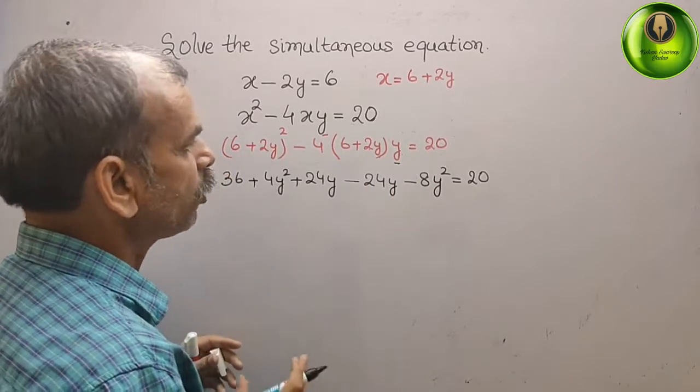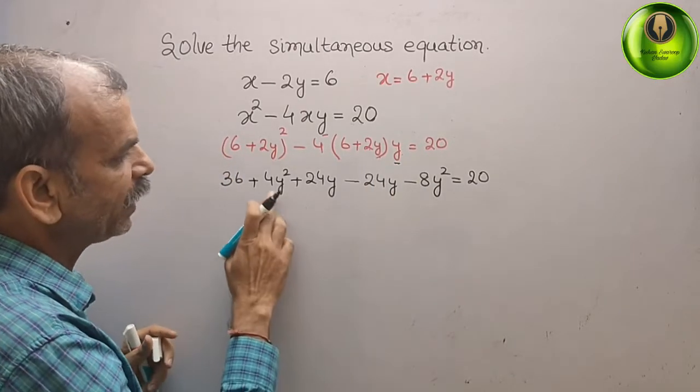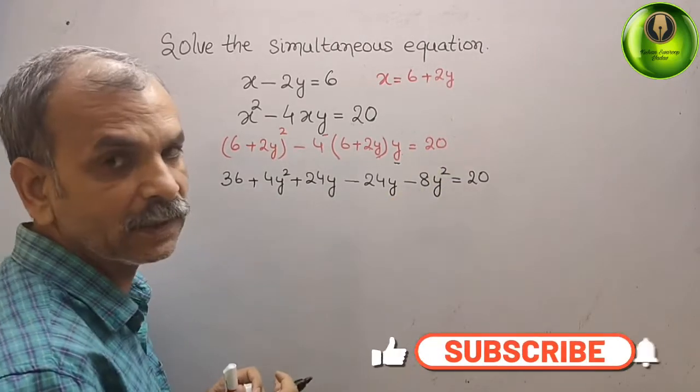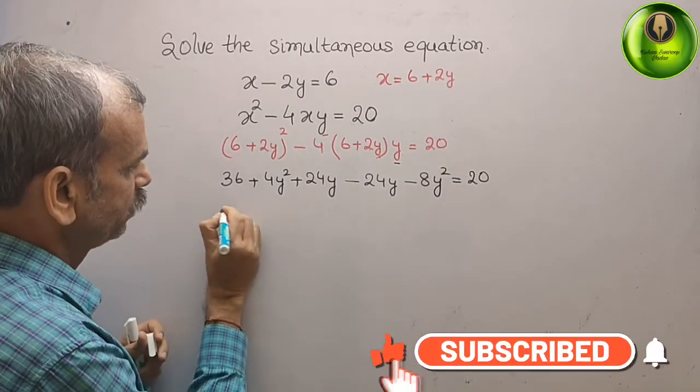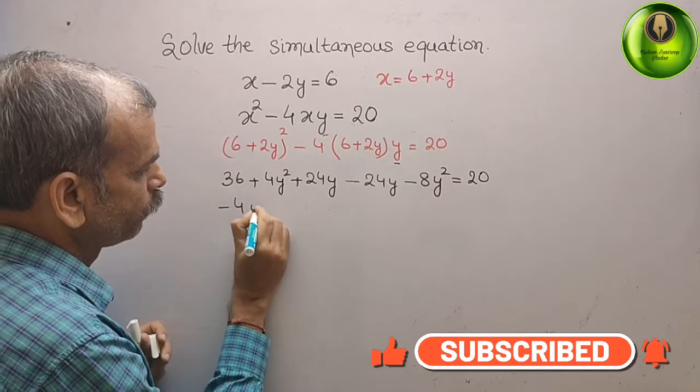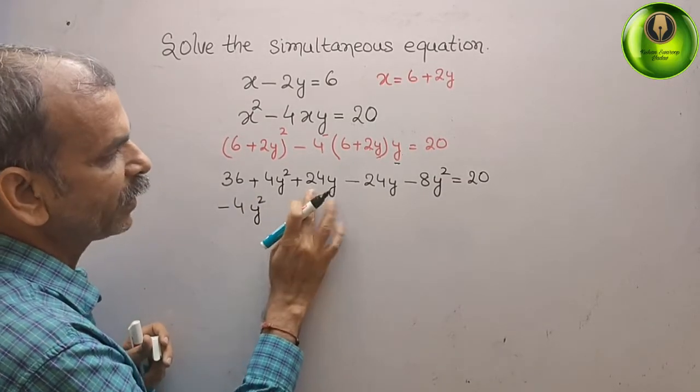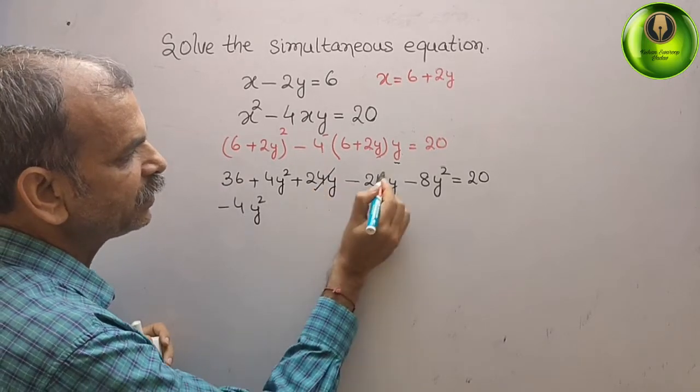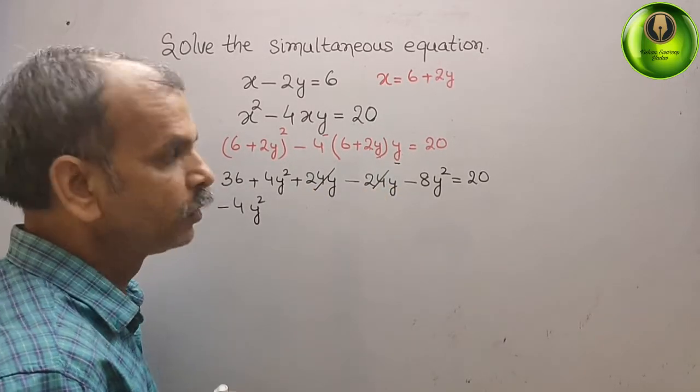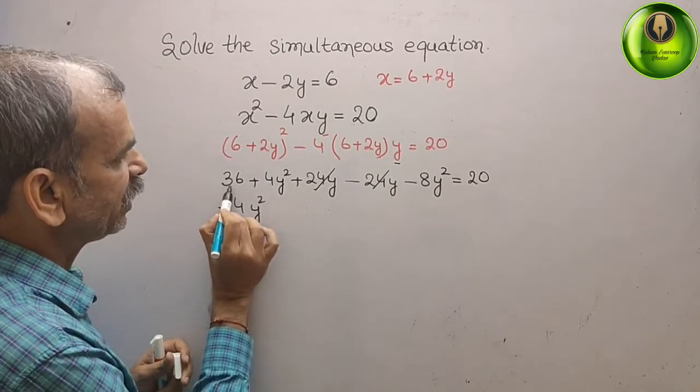Now solve this. We will get 4y squared minus 8y squared is minus 4y squared. Next comes your y. You can see plus and minus 24 is gone.